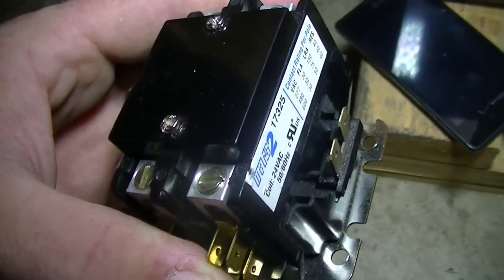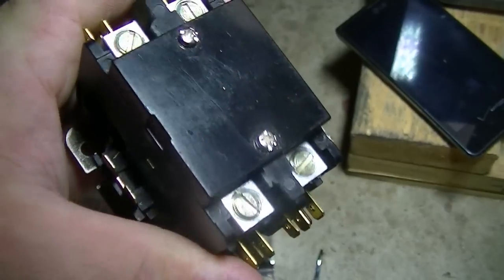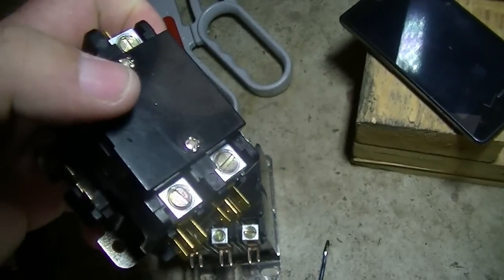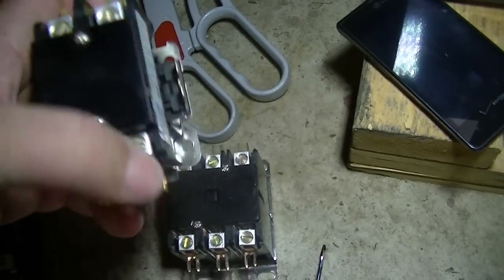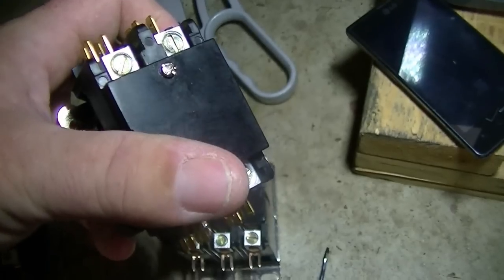Here's our double pole contactor. Same thing, except it's switched on both legs. So on this one, you probably put your crankcase heater off the bottom with the discharge temperature switch.